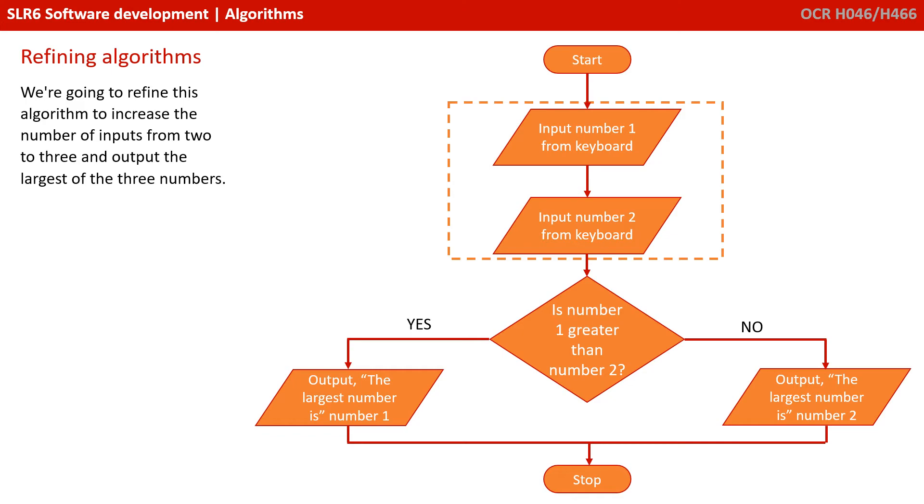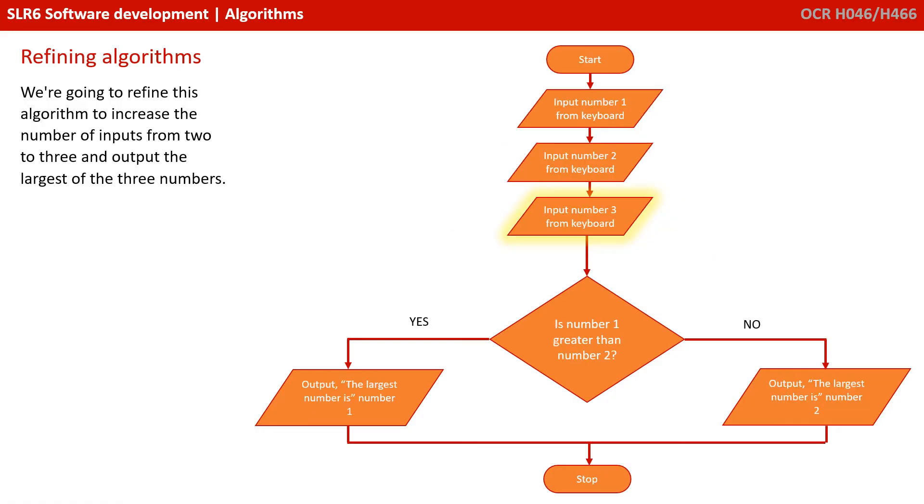You would first need to identify the areas of the existing algorithm which need modifying. Well, we would clearly need to modify this top section to take in an extra input from the user. Which you can see we've done here.